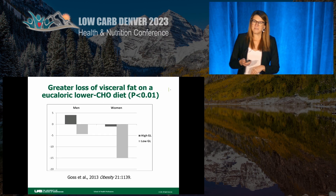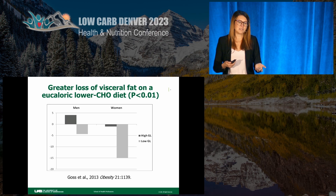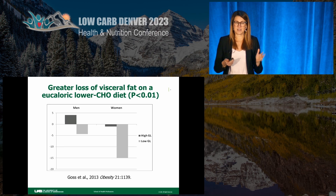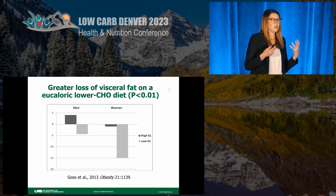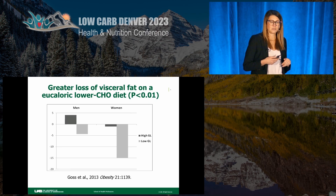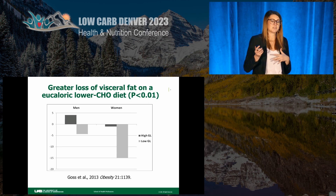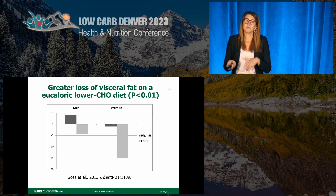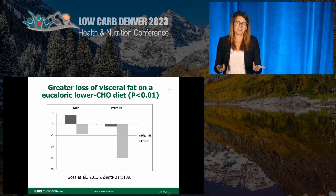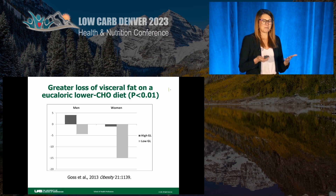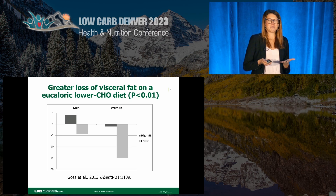What we found was very interesting: with the reduced-carbohydrate low-glycemic diet, in the absence of weight loss, we got selective depletion of visceral adipose tissue. In all the participants combined, there was about an 11% decrease in their visceral fat. If we looked by sex, this was particularly profound among the women consuming the low-glycemic diet. Interesting — so where did the fat go? They were in weight maintenance.